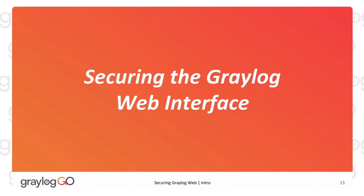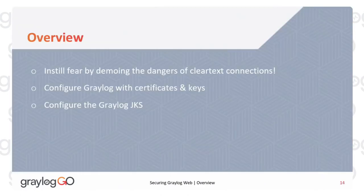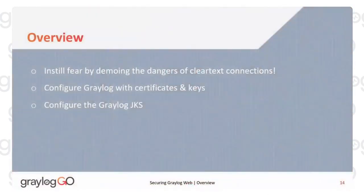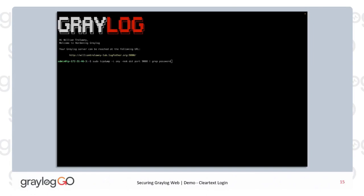So let's start securing the Graylog web interface. Step one: instill fear by demoing the damages of clear text connections. We'll show you exactly why clear text connections are no good. Then to remedy this, we will configure Graylog with certificates and keys and then configure the Graylog internal Java key store. I have a super slick demo here — first, I'm going to start with a TCP dump on port 9000.